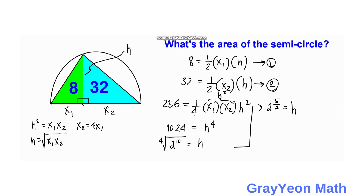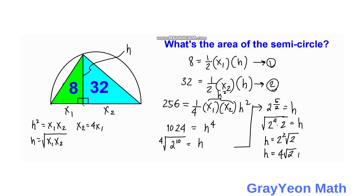This can be written as the square root of 2 to the 4th times 2, which simplifies to h equals 4 square root of 2 units.